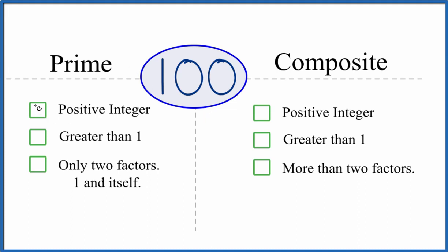For a prime number, it will be a positive integer. It'll be greater than 1, so we have a positive integer, a whole number greater than 1, and there will only be two factors that go into the number. So 1 and 100, those would be the only factors.